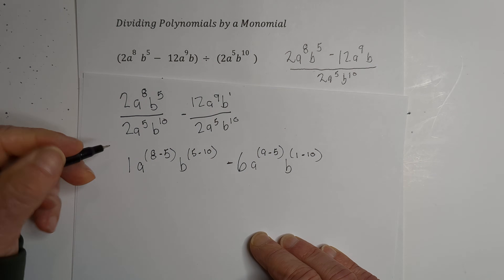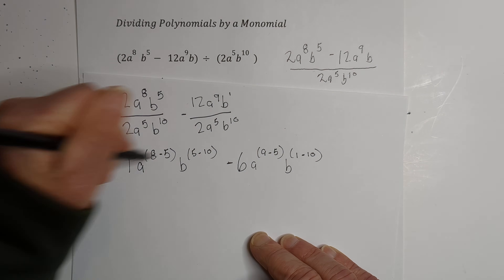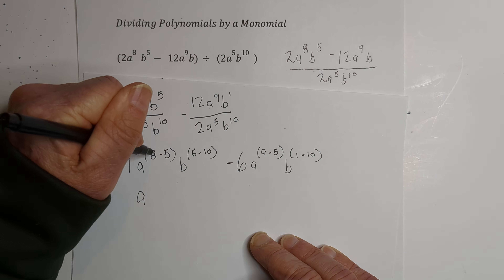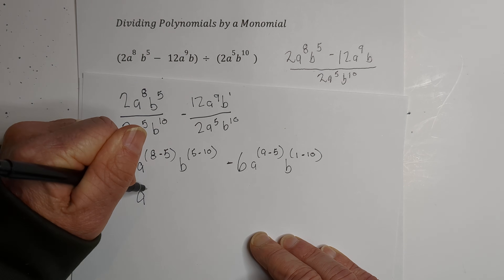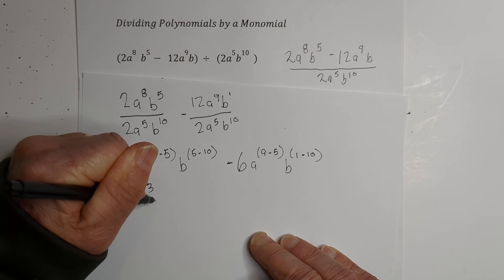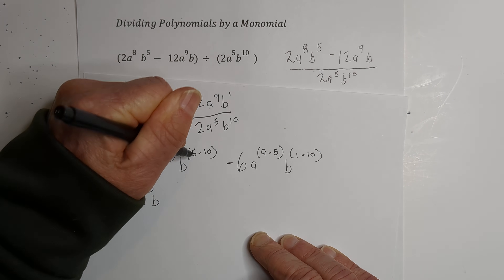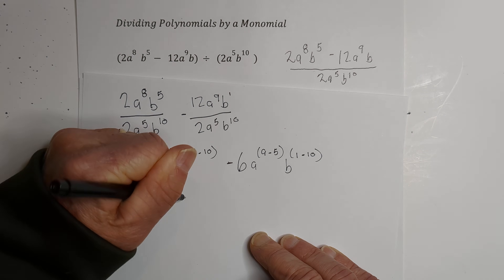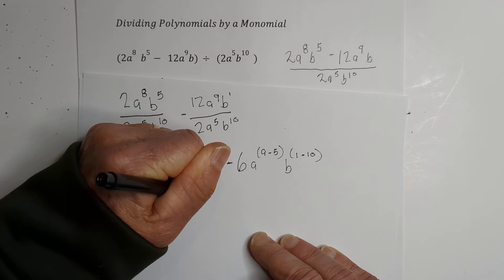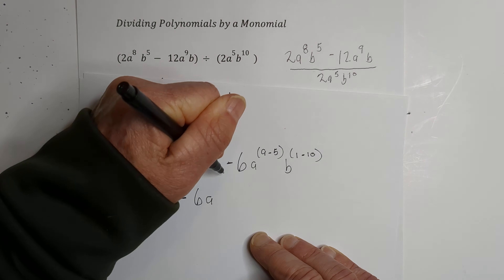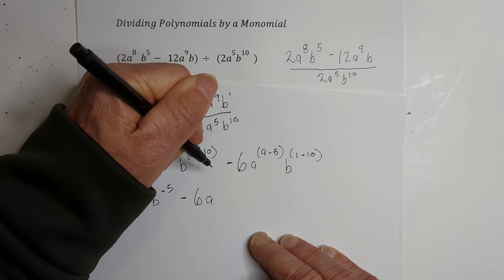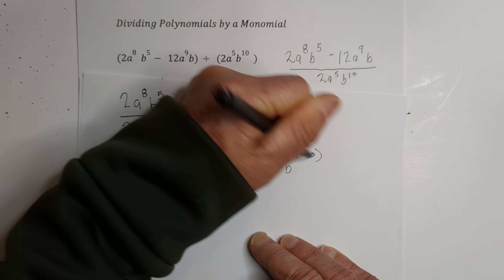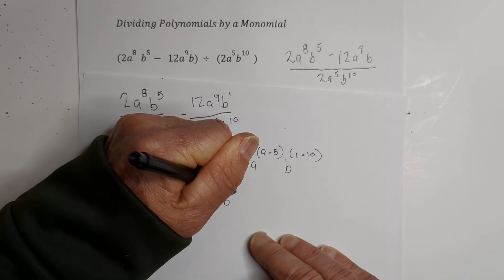Now let's go ahead and subtract the exponents. So we have a to the 3rd (8 minus 5 is 3), and then 5 minus 10 is negative 5. Minus 6, then we have a to the 4th (9 minus 5 is 4), and b to the negative 9 (1 minus 10 is negative 9).